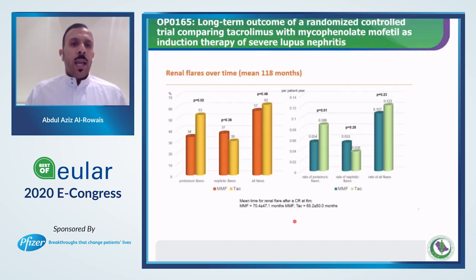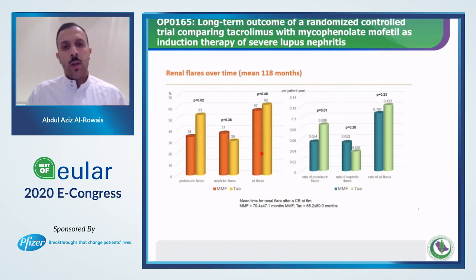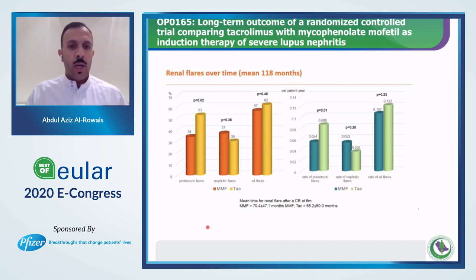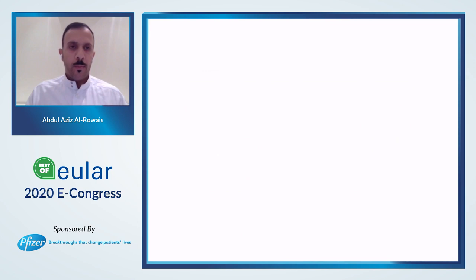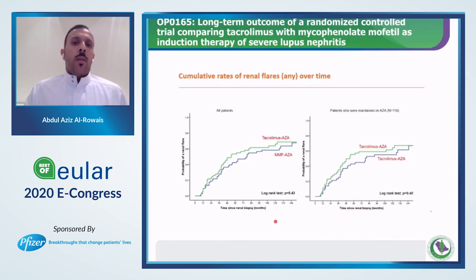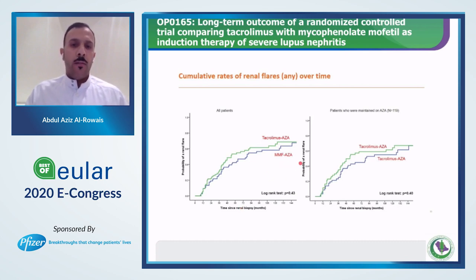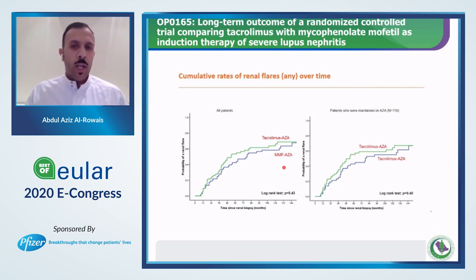The graph shows frequency of renal flares over time — no difference between tacrolimus and mycophenolate groups, though proteinuric flares were significantly more common in the tacrolimus group. Another slide shows the risk to develop renal flares over time — again no significant difference between tacrolimus and mycophenolate groups. In patients with pure membranous lupus nephritis specifically, there was also no difference between the two groups.